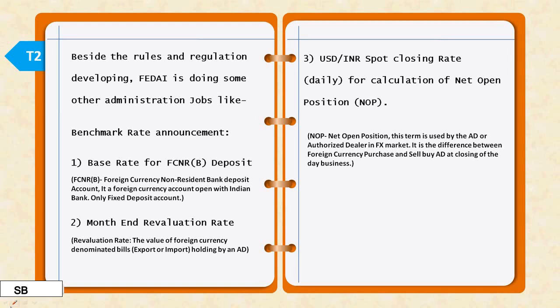Now let's know a little about FCNR-B deposits. FCNR-B deposit's full form is Foreign Currency Non-Resident Bank account — it is a fixed deposit account. FEDI declares the base rate that authorized dealers and market players use. The market players do hedging and secure themselves. The liabilities and assets created in the market need to be calculated in Indian rupees, and for that revaluation rate, FEDI declares the rate from market open till market close.